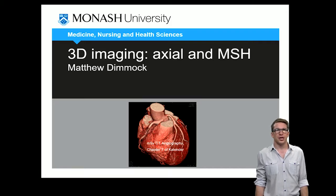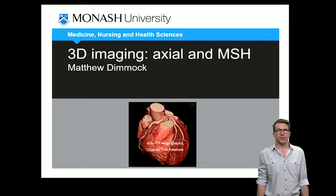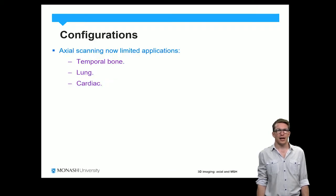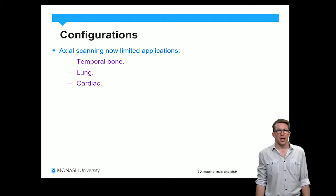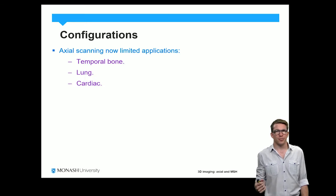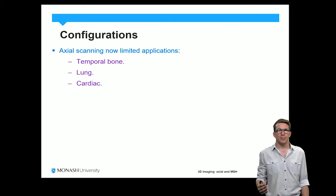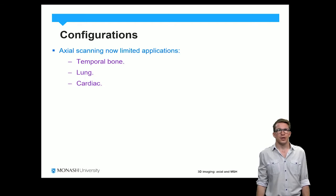In this section we're going to discuss 3D imaging, axial and multi-slice helical aspects of CT. In terms of the configurations, the axial configuration that we discussed in our introductory lectures in previous units has been superseded clearly by helical scanning. We've already discussed some of the basic aspects of helical scanning, but the aim of this fourth year content is to flesh out in more detail some of the discussions we've previously had and to build around some of the mathematical basis of these details.